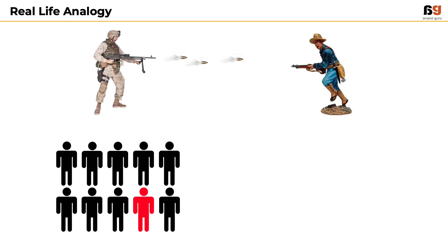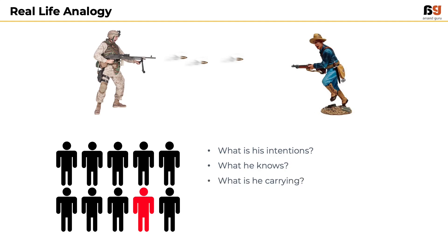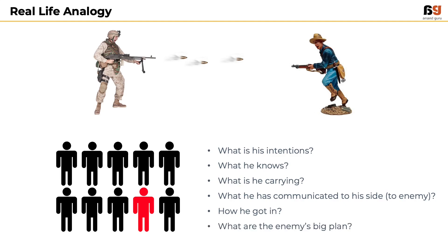What do you do now? Do you shoot and kill him? Probably not, because now you have so many questions that you want answers for — like, what is his intention? What does he know about us? What is he carrying with him? What has he communicated to the enemy? How did he get into our team in the first place? What are the bigger plans of the enemy?